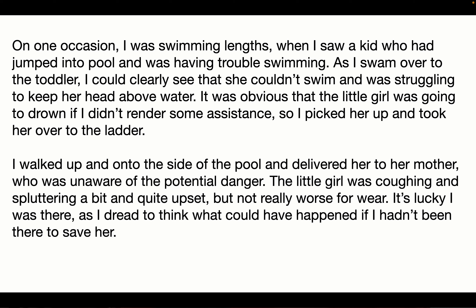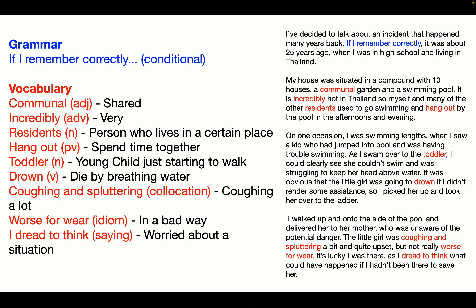On one occasion, I was swimming lengths when I saw a kid who had jumped into the pool and was having trouble swimming. As I swam over to the toddler, I could clearly see that she couldn't swim and was struggling to keep her head above water. It was obvious that the little girl was going to drown if I didn't render some assistance, so I picked her up and took her over to the ladder. I walked up and on to the side of the pool and delivered her to her mother, who was unaware of the potential danger. The little girl was coughing and spluttering a bit, and quite upset, but not really worse for wear. It's lucky I was there, as I dread to think what could have happened if I hadn't been there to save her.